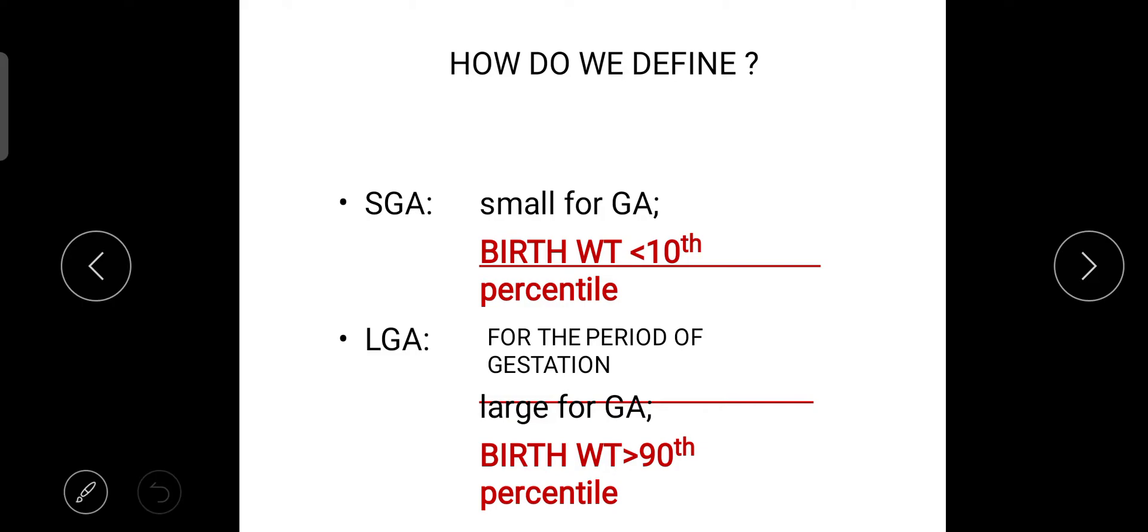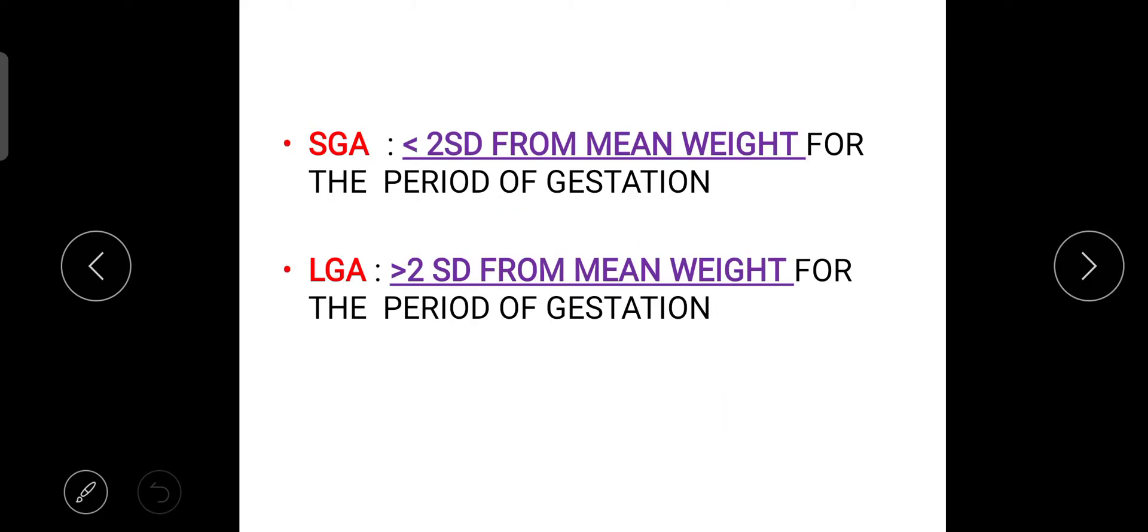In case of small for gestational age there will be 2 SD from mean weight for the period of gestation. And in case of large for gestational age it is more than 2 SD from the mean weight for the period of gestation.